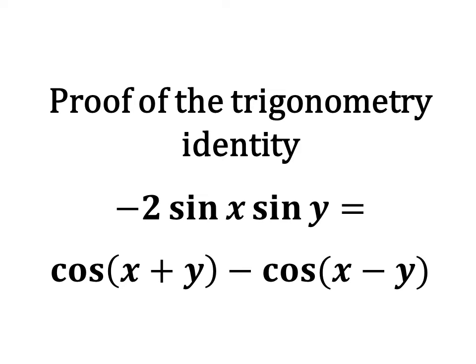In this video, we will learn to prove the trigonometry identity: minus 2 times sine of x times sine of y is equal to cosine of x plus y minus cosine of x minus y.